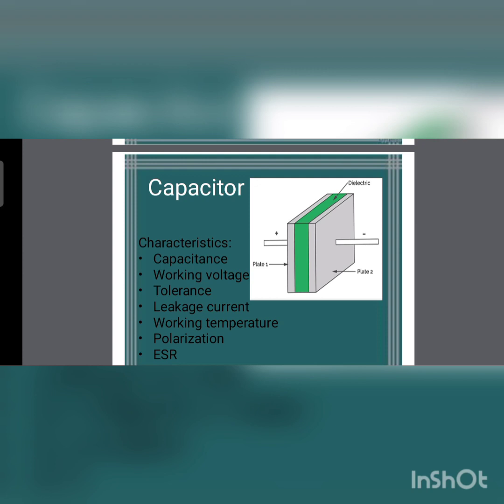The characteristics of a capacitor: capacitance is the ability to store the amount of electrical energy. The capacitance value of the capacitor is measured in picofarads, nanofarads, and microfarads, and the large quantity of capacitance is the farad.